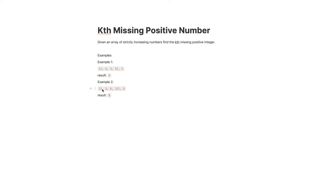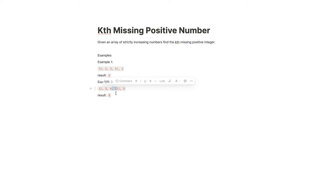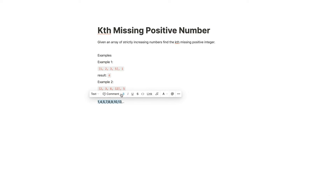Another example: given two, three, six, twelve and k equals five, the first missing number is one because it's a positive number not in the array. So we list all missing numbers: one, four, five, then seven, eight, nine, ten — the fifth missing number is eight.